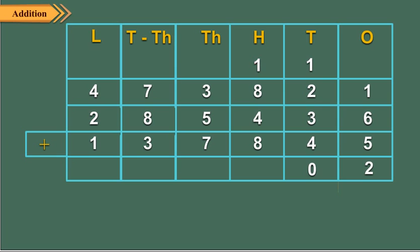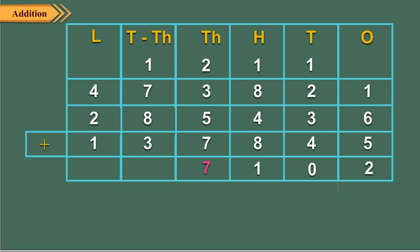Add hundreds: 1 hundred carried plus the hundreds digits is equal to 21 hundreds. So we write 1 in the hundreds column and carry over 2 to the thousands column. Add thousands: 2 thousands carried plus 3 thousands plus 5 thousands plus 7 thousands is equal to 17 thousands, which is equal to 1 ten-thousand plus 7 thousands. So we write 7 in the thousands column and carry over 1 to the ten-thousands column.